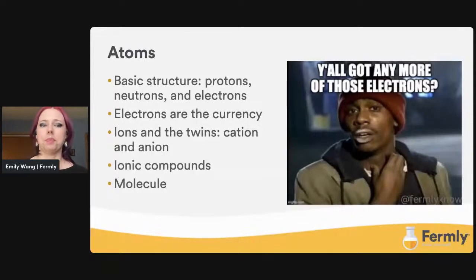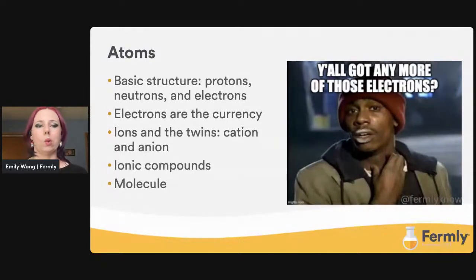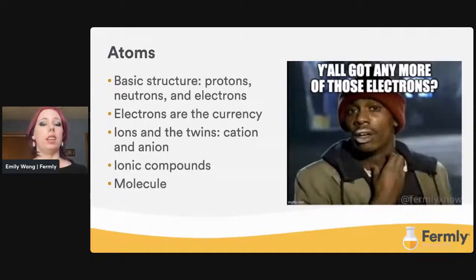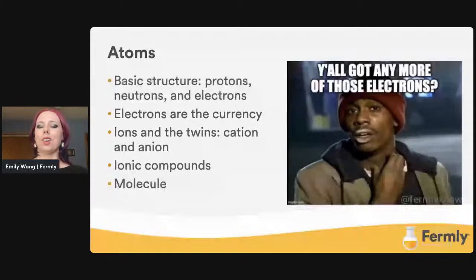Let's clarify a difference. Isotopes differ in number of neutrons. Ions differ in number of electrons. Ions are the result of an atom losing or gaining electrons to have a complete orbit. If an atom has an extra electron or two, it is an anion. But if it is missing an electron or two, it is a cation. Anions and cations can come together to form something neutrally charged called an ionic compound, which we often refer to as salt.